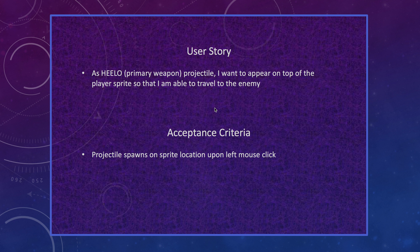In my second user story, as a helo projectile, I want to appear on top of the player sprite so that I'm able to travel to the enemy. The acceptance criteria is: projectile spawns on sprite location upon left mouse click.